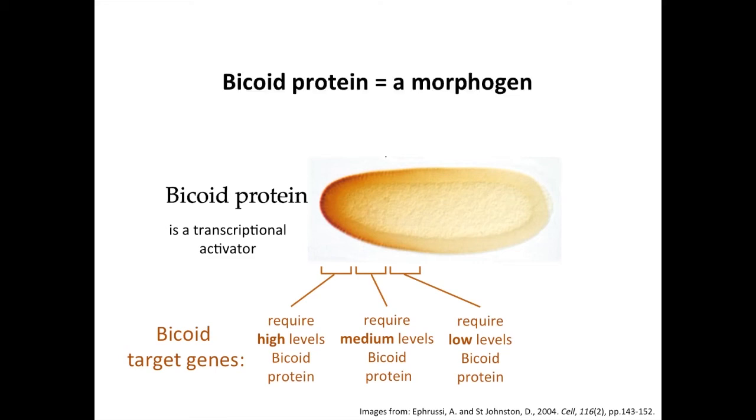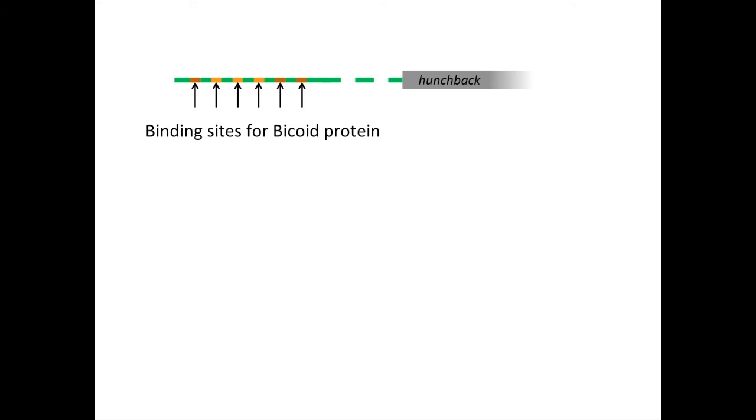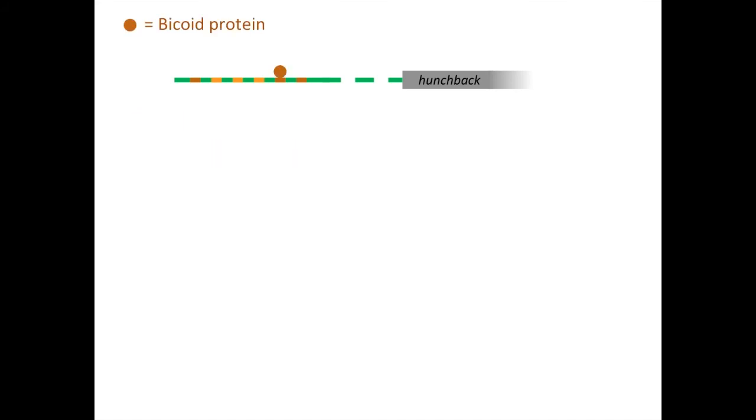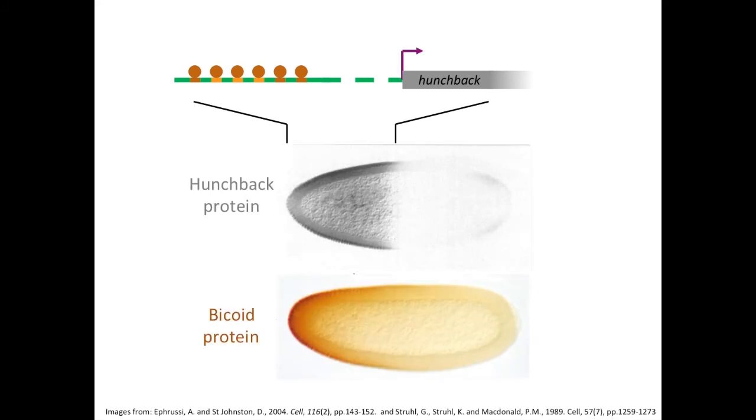One gene whose expression is activated by Bicoid is the gene hunchback. In a promoter region of the hunchback gene, there are six binding sites for the Bicoid protein — three bind Bicoid weakly and three bind strongly. There appears to be cooperative binding of Bicoid to the hunchback promoter: once Bicoid is bound at one site, it makes binding more likely at the other sites. This cooperative binding, along with some feedback mechanisms, results in expression of the hunchback gene throughout the anterior of the embryo, with a pretty abrupt cut-off where the levels of Bicoid drop below the threshold level needed for activation.